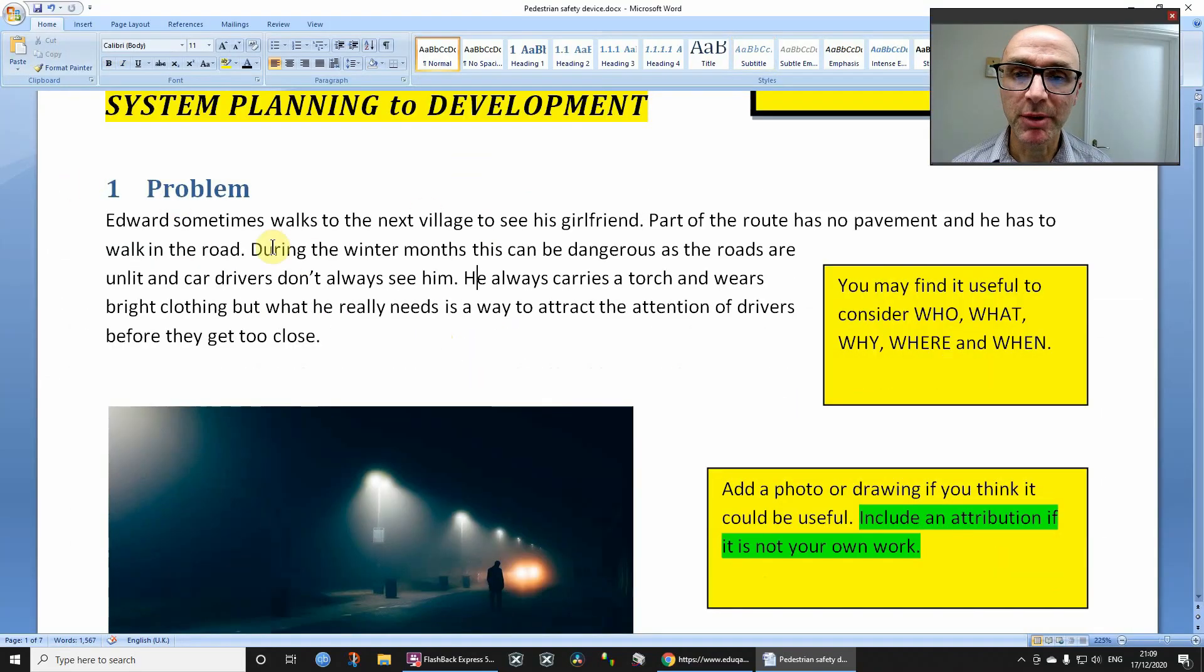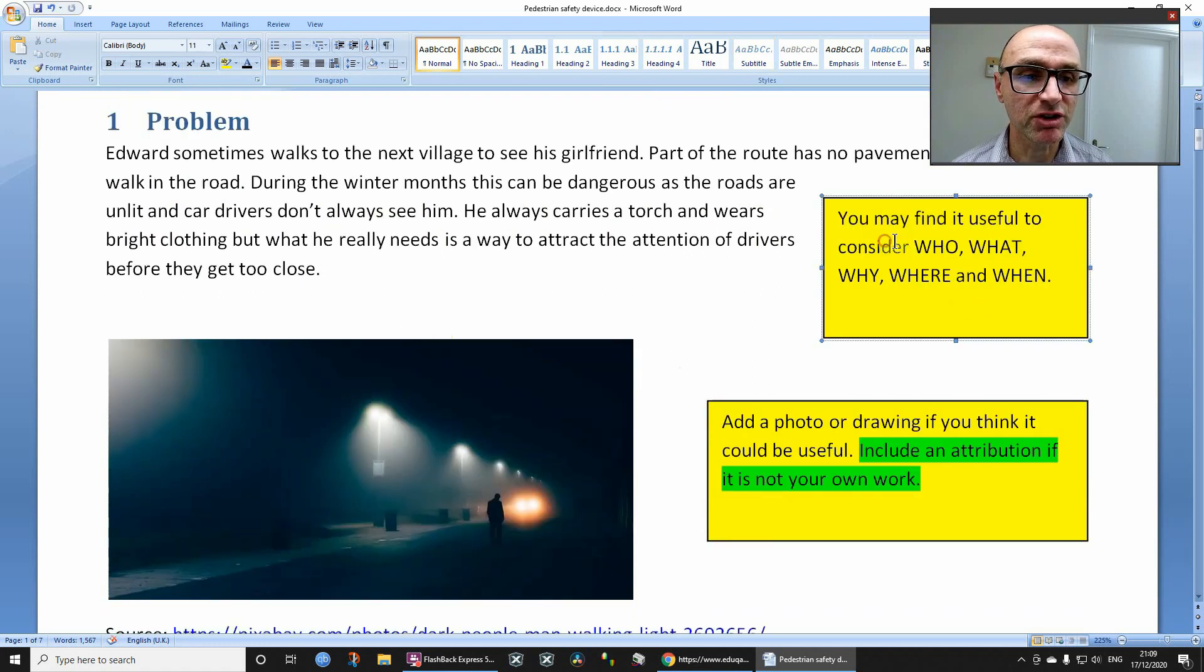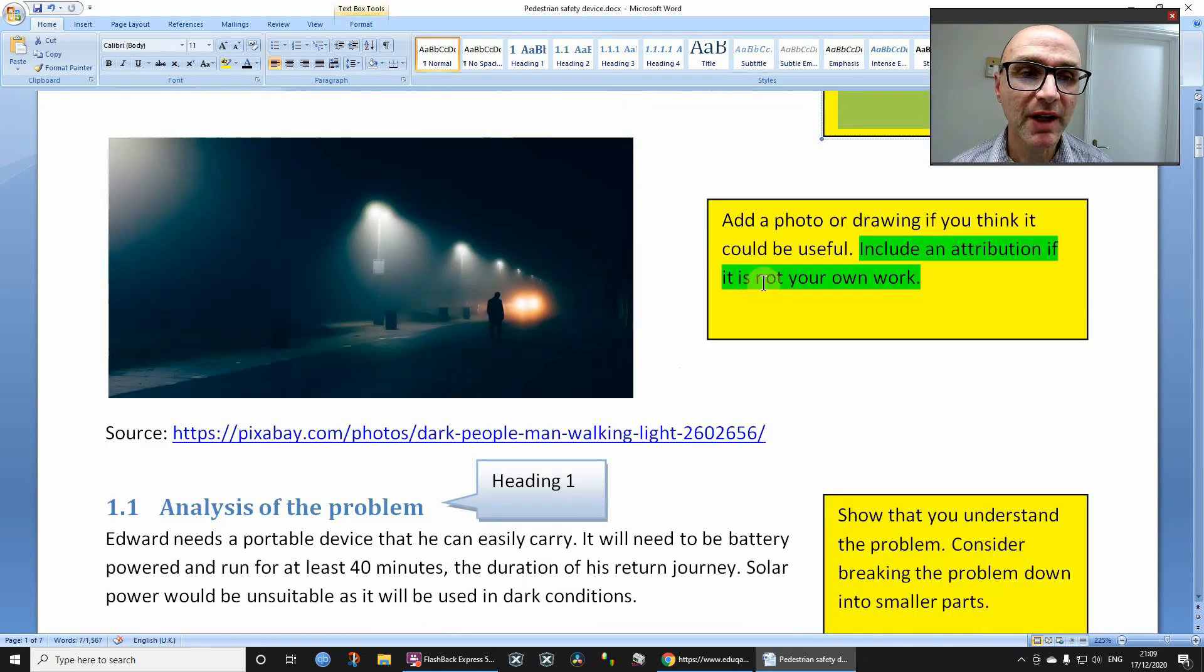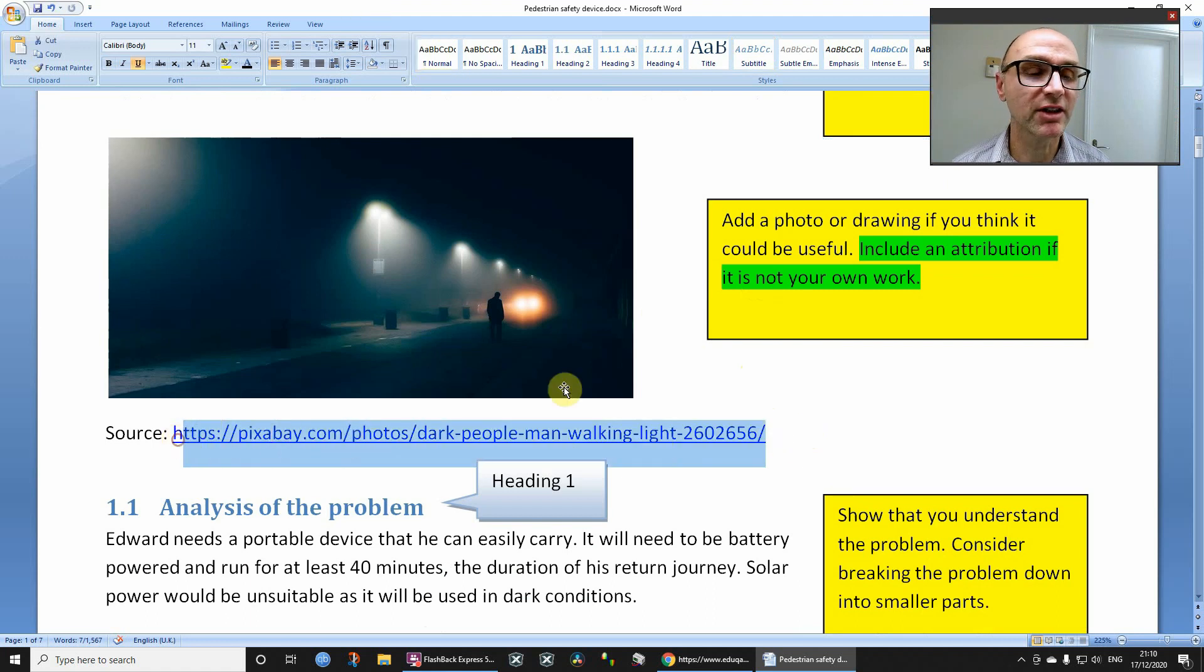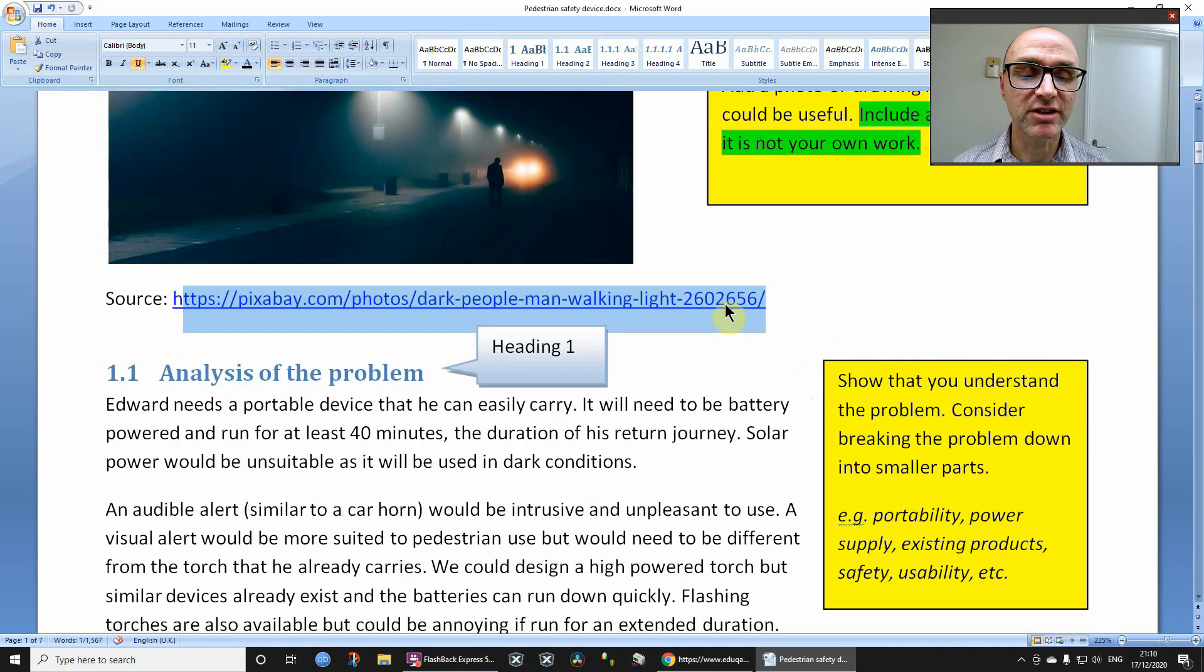So, in this particular case, the problem that I'm identifying is just that it's dangerous to walk along the road in the dark. Now, when you do this identification problem, you might find useful to consider who, what, the why, the where, the when, those sorts of things. Now, if you want to include a photo, nothing wrong with that, sometimes it's useful, but don't just do it for the sake of filling out a page. Do make sure that you include a link, unless I'm assuming that it's going to come off the internet. And so it's quite clearly not your own work, okay? So you are crediting whoever, or crediting the page with wherever it came from.